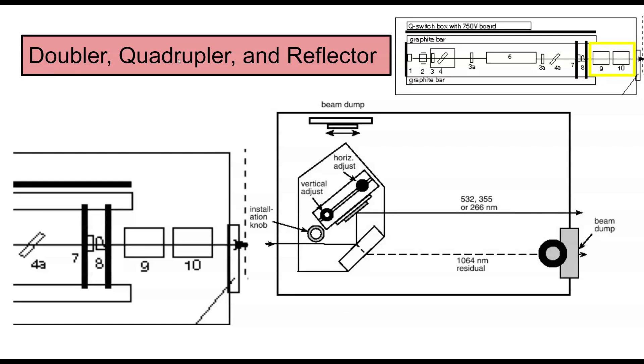Now we go on to the doubler, quadrupler, and reflector. These are split up, since the reflector is in a different box than all the previous parts we've been talking about in the doubler and quadrupler. The doubler and quadrupler are here to shorten the wavelength to, hopefully, 266. And we want that because it's more easily absorbable by our target. So more energy will be used from the actual laser, which is what we want.